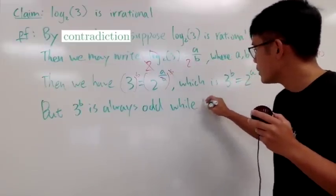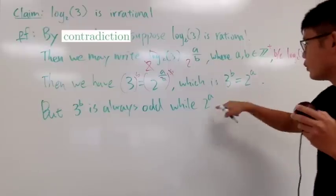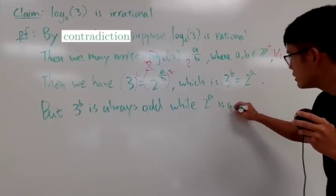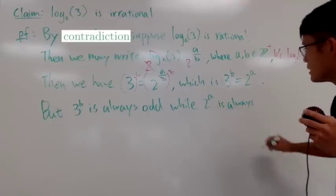While 2 to the a, when you have an even base to a positive integer power, this right here is always even.